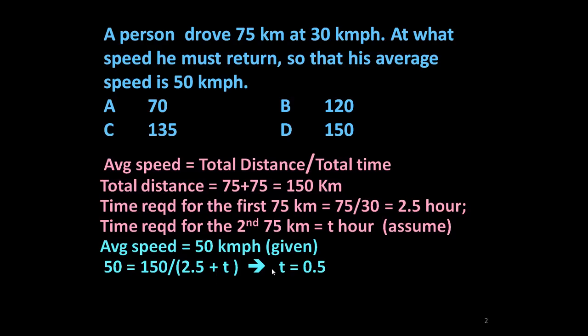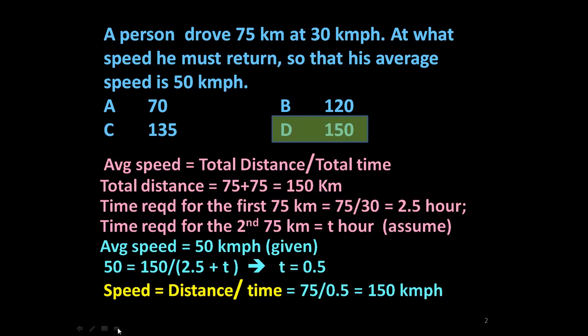Solving this equation you will get T equals 0.5. Since speed equals distance upon time, he must return 75 km in 0.5 hours. So his speed will be 75 divided by 0.5 equals 150 km per hour.